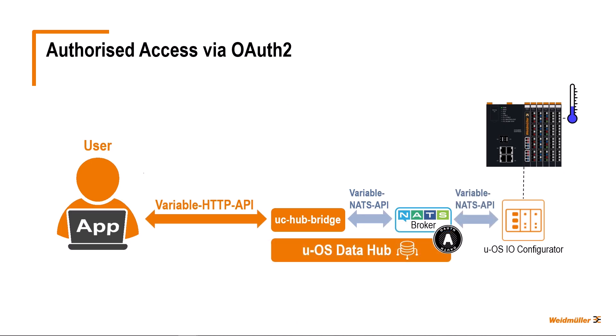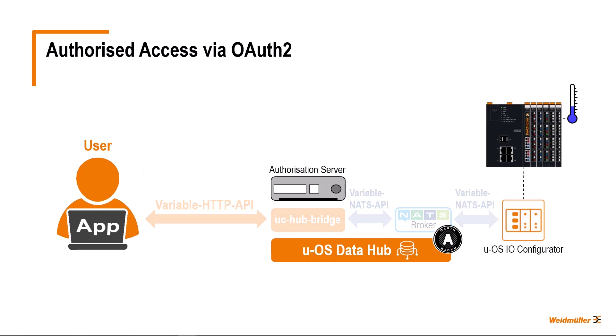Now we want to enable secure, authorized access via the variable HTTP API, while avoiding a password antipattern with a constant exchange of sensitive passwords. To implement this, OAuth 2 uses an authorization server. With UOS, this authorization server is the Identity and Access Manager, or UOS IAM for short. I will show you how to use this UOS IAM to implement secure, authorized access in the UOS Data Hub.